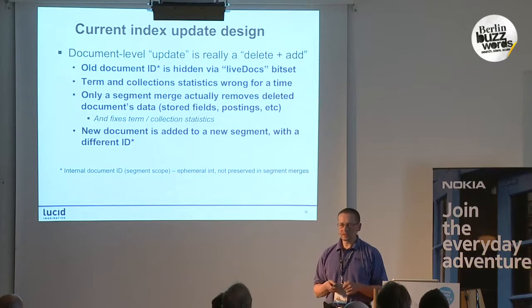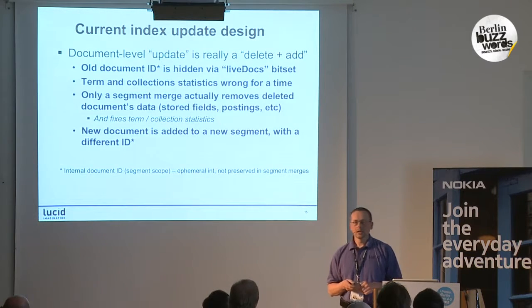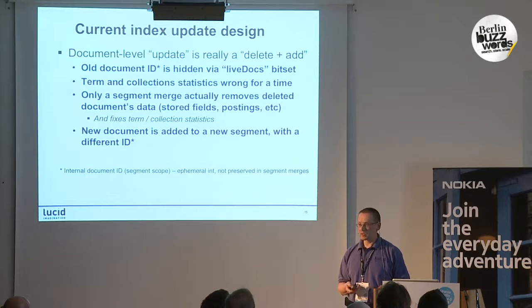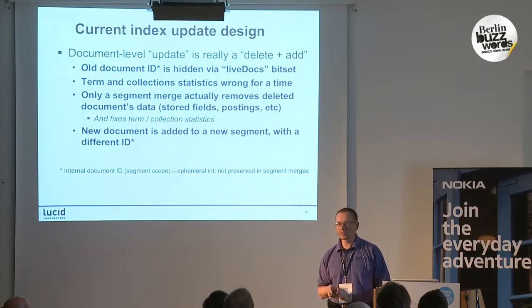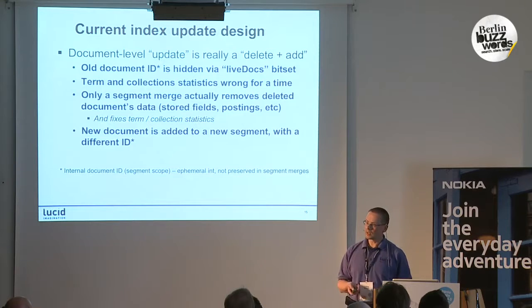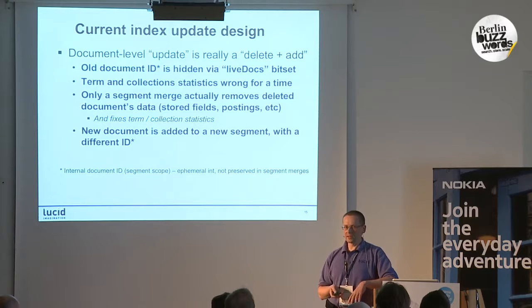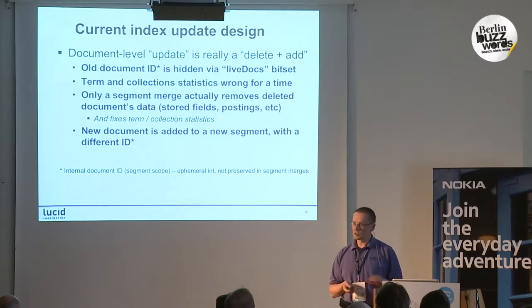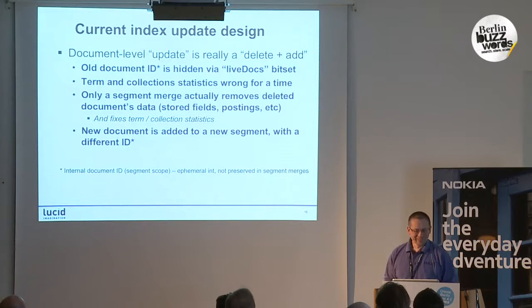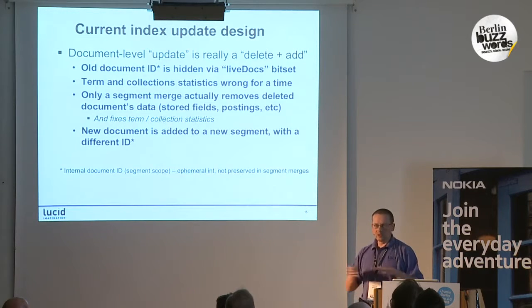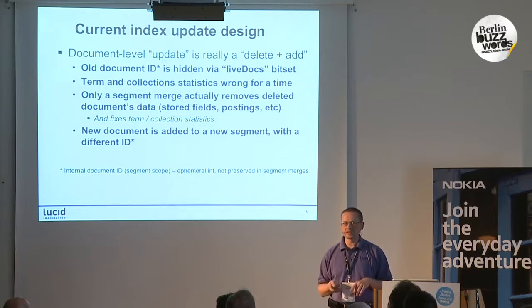Update is really a delete plus add, so a document's data doesn't actually go away — it's only hidden by a special live-docs bitset. This means that for a certain time, term and collection statistics are wrong. For example, if you updated only one field in a document but all other fields remain the same, then term statistics are counted twice for some terms. If you have a rare term like 'KGB', suddenly its frequency appears twice as high as before, which affects scoring. Only after segments are merged is this data physically removed and statistics corrected.